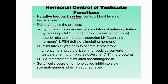Testosterone is the hormone that gives males their secondary characteristics like a deeper voice, greater muscle growth, and facial hair. This begins at puberty, when males start producing testosterone. It all begins in the hypothalamus — the master part of the brain — which releases a hormone called GnRH, or gonadotropin-releasing hormone.